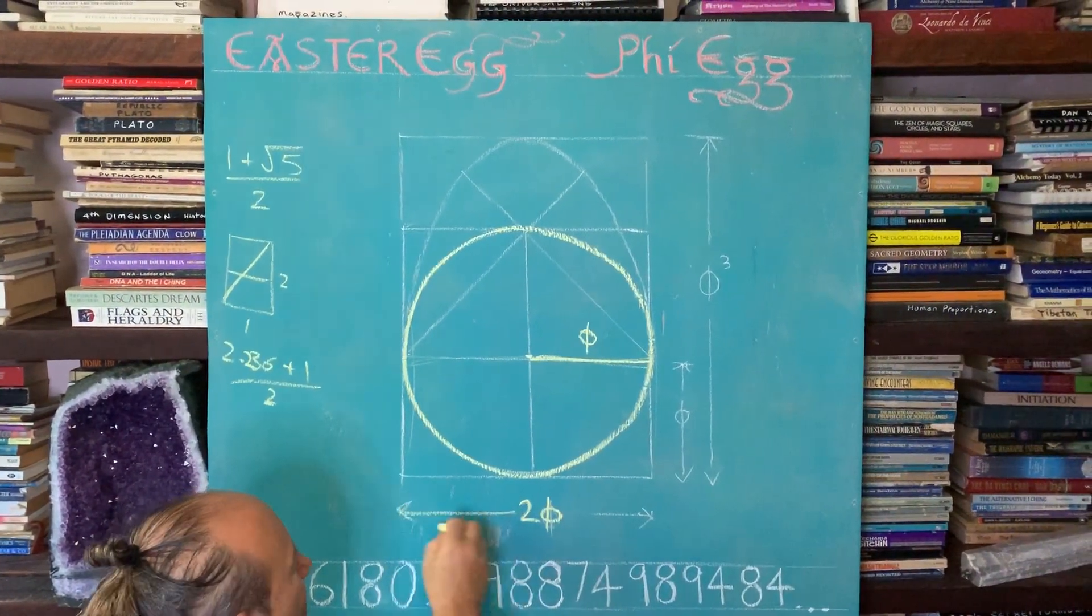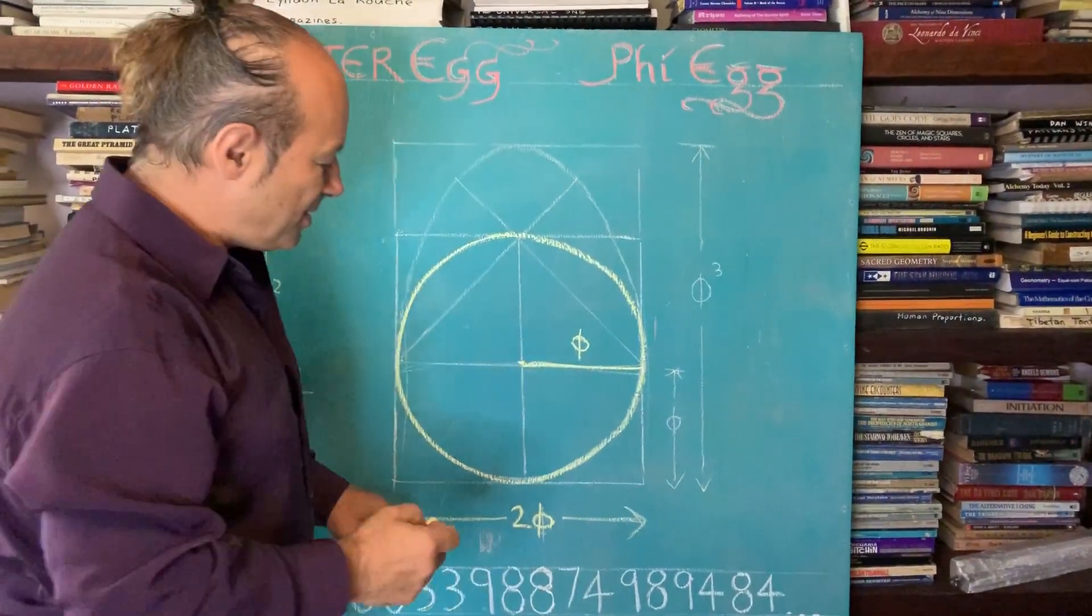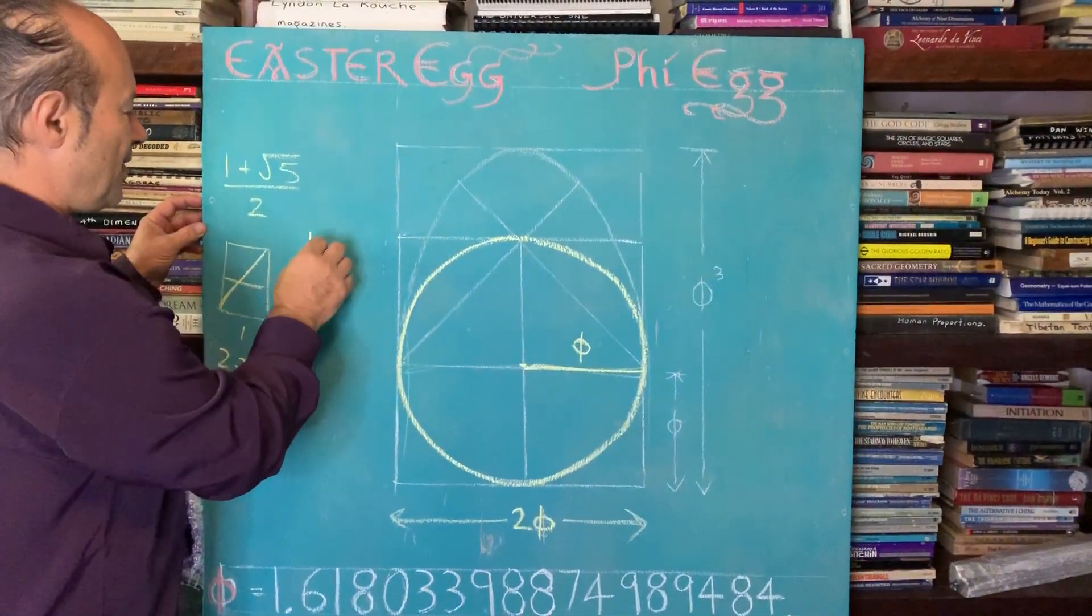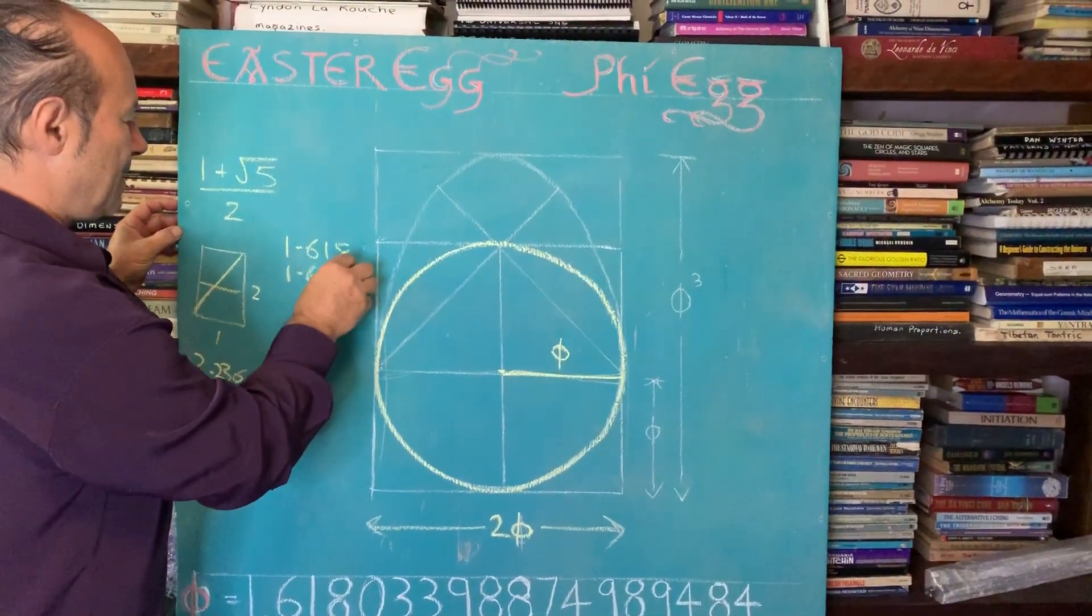So that's just basically the size of the square, 2 Phi. Now I need to know this value for 2 Phi. What's the value of 2 Phi? It's 1.618 plus 1.618.